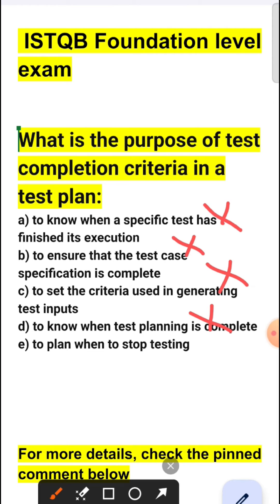Option E is the correct answer because it helps in deciding when testing activity should be concluded, based on predefined conditions or criteria such as achieving a certain level of test coverage, meeting specified quality goals, or reaching project deadlines. So the correct answer is E — to plan when to stop the testing. This is the purpose of test completion criteria in a test plan.